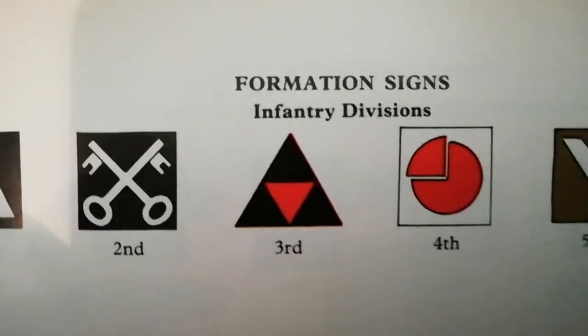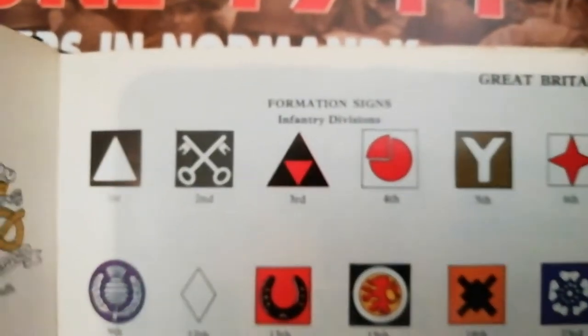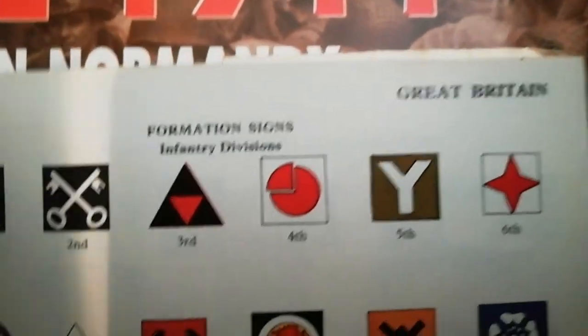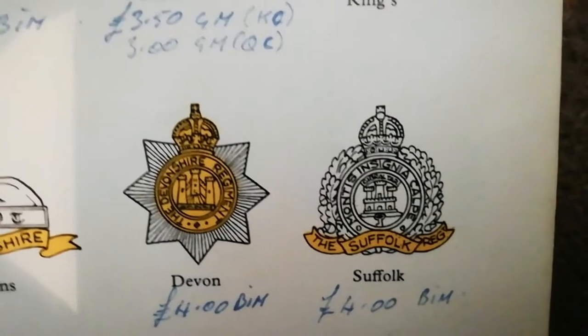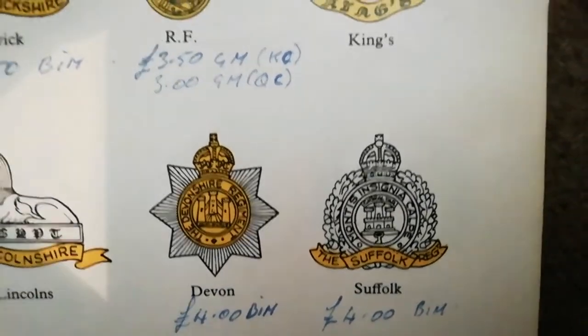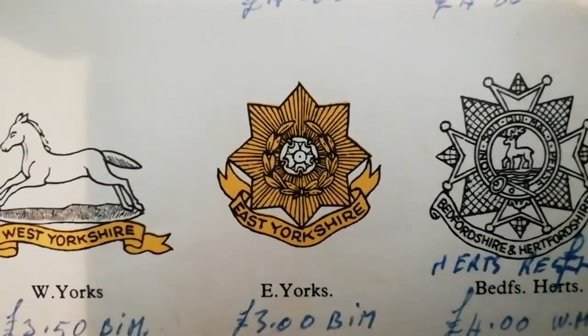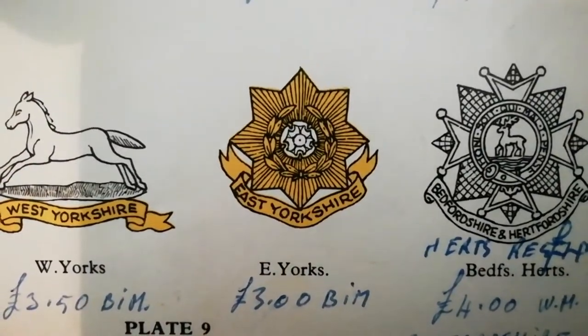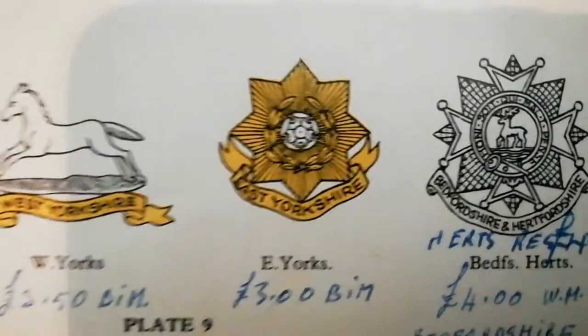In your infantry divisions you can get multiple regiments. Just to pick the most famous ones from the 3rd Infantry Division — you can get the Suffolk Regiment there, and also the East Yorkshire Regiment. So that gives you a sense of how regiments sit within the division structure.